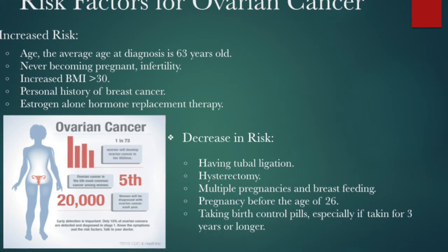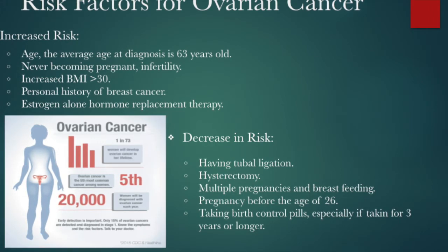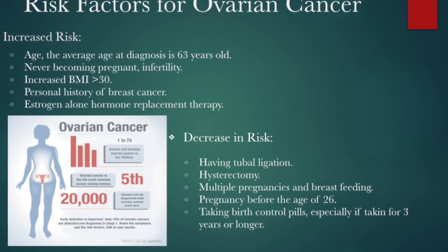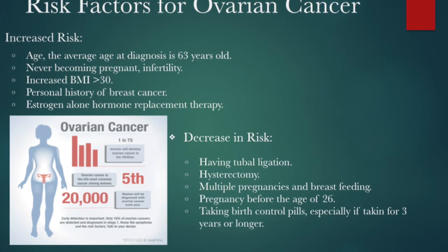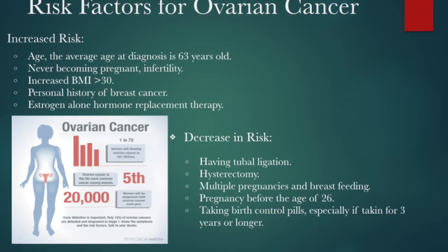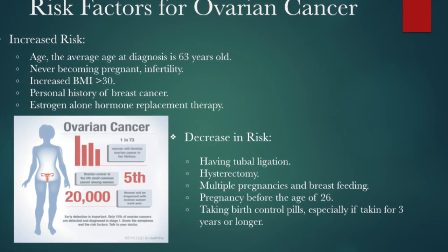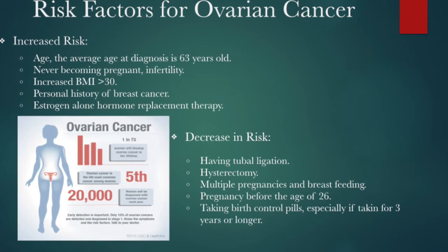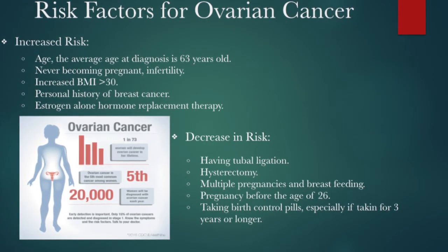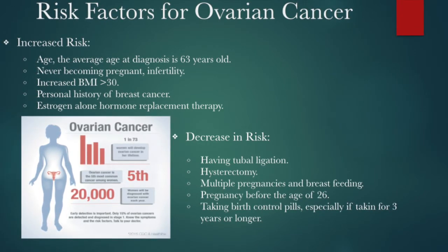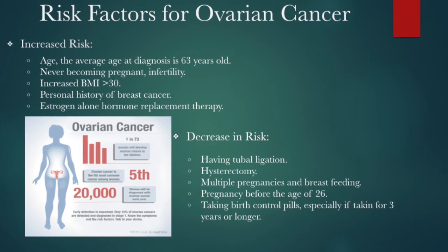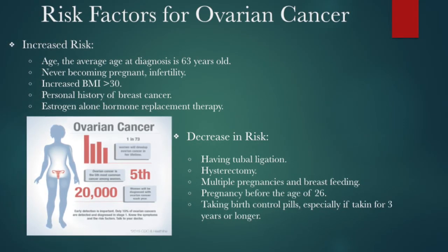A risk factor is something that increases someone's chances of getting a disease or cancer. Simply having a risk factor, or even several, does not guarantee that one will get a specific disease. The risk factors discovered are specific only to epithelial ovarian cancer. The factors that increase someone's risk include advanced age — the average age upon diagnosis is 63 years old — women who have never been pregnant, obesity, personal or family history of breast cancer, especially when there is an inherited mutation in the BRCA1 and BRCA2 genes, and estrogen-alone hormone replacement therapy.